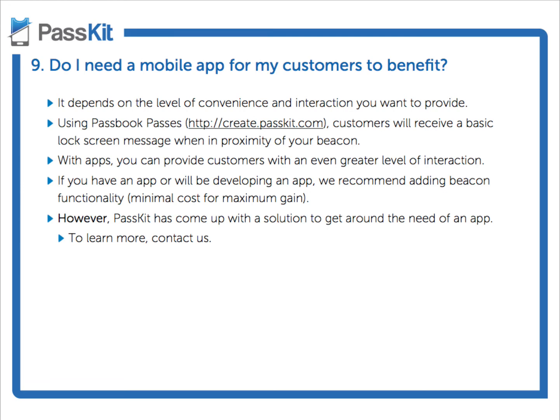With the pass, you can program a path — you go to passkit.com, create a pass, input your beacon details, and send it to your customer. Whenever they have that in their phone and they're near a beacon, they'll get a lock screen message that opens up the pass. In order for there to be a higher level of interaction and engagement, you will probably need to have an app with beacon functionality so that there is this extra level of interaction, engagement, and personalized experiences.